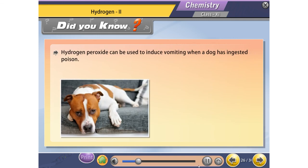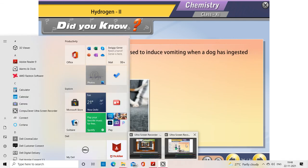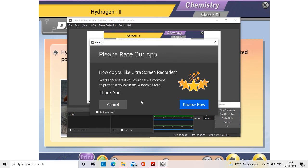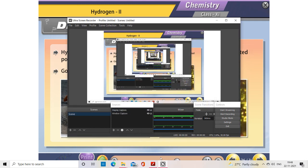Did you know? Hydrogen peroxide can be used to induce vomiting when a dog has ingested poison. Gold nanoparticles can be used to produce hydrogen fuel.